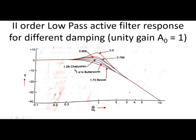The three filter types are Chebyshev, Butterworth, and Bessel. The Chebyshev filter has a damping factor of 1.06, with a response that is not flat and has ripples in the pass band. The Butterworth filter has a damping factor of 1.414 with a flat pass band response, followed by roll-off in the stop band. All audio filters are typically Butterworth filters. The Bessel filter has a flat response but it is decreasing in the pass band itself.